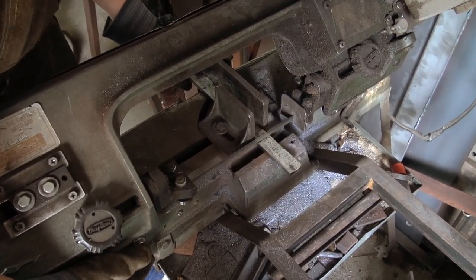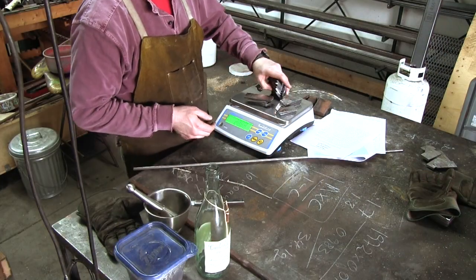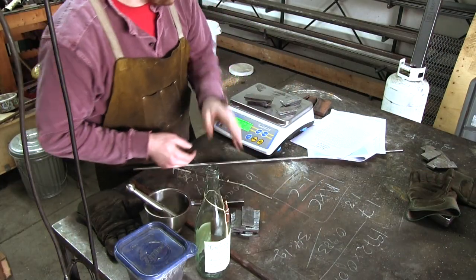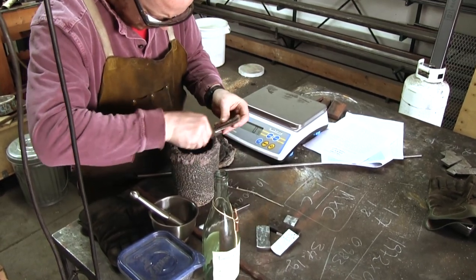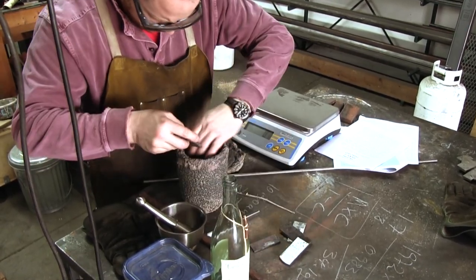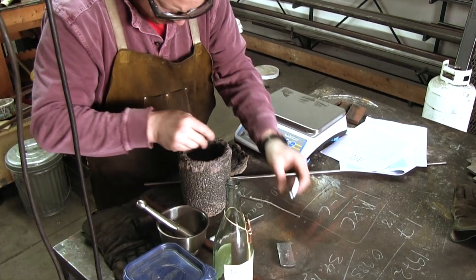Instead of dried wood as a carbon source, we are using pulverized charcoal. For a 2000 gram charge of wrought iron, we use approximately 35 grams of charcoal. We are aiming for a carbon content between 1 to 2%.